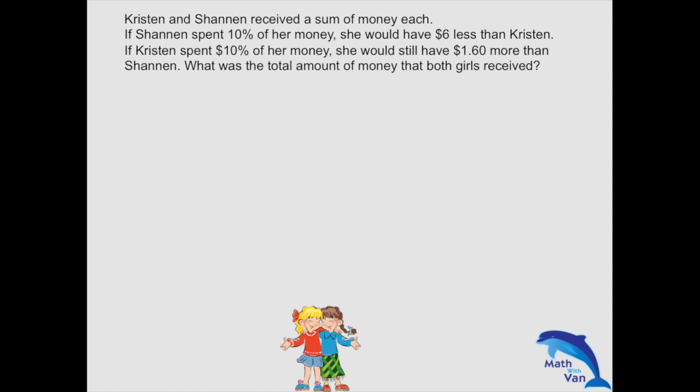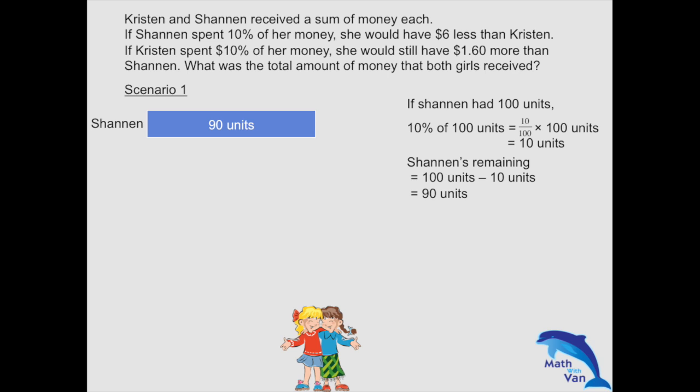So the first EVE: if Shannon spent 10% of her money, she would have $6 less than Kristen. In order to do away with the percentage so that we don't be bothered with the base, let's use units. If Shannon had 100 units, after spending 10% of her money, she would have 90% left — that is 90 units. So after scenario 1, Kristen would have $6 more than Shannon, which is 90 units plus $6.